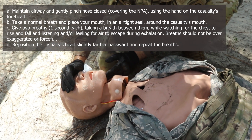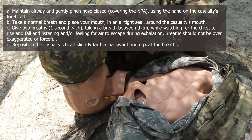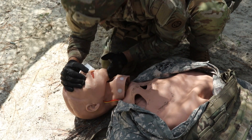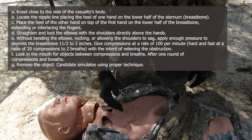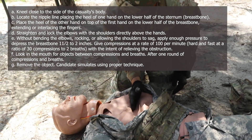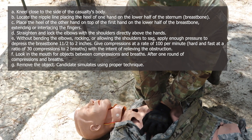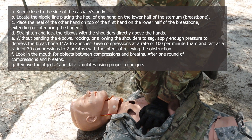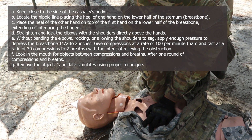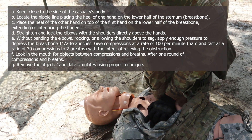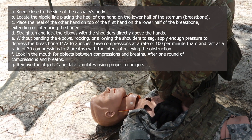The grader will state the chest did not rise. Re-position the casualty's head slightly farther backward and repeat the breaths. The grader will state the chest did not rise again. Perform chest compressions to clear the airway. Kneel close to the side of the casualty's body. Locate the nipple line, placing the heel of one hand on the lower half of the sternum. Place the heel of the other hand on top, extending or interlacing the fingers. Straighten and lock the elbows with the shoulders directly above the hands. Without bending the elbows, rocking, or allowing the shoulders to sag, apply enough pressure to depress the breastbone one and a half to two inches. Give compressions at a rate of 100 per minute, hard and fast, at a ratio of 30 compressions to two breaths, with the intent of relieving the obstruction.